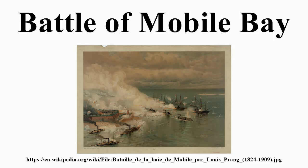Tennessee had been built on the Alabama River near the town of Selma. Her guns were prepared under the direction of Commander Catesby App. Roger Jones, who had commanded CSS Virginia in her famous duel with USS Monitor on March 9, 1862 — the second day of the Battle of Hampton Roads. Jones succeeded to command of Virginia after her original commander, Franklin Buchanan, was wounded the previous day. Buchanan had been promoted to the rank of admiral for his exploits that day, the first admiral in the Confederacy. Admiral Buchanan was now in command of the small Confederate flotilla at Mobile.